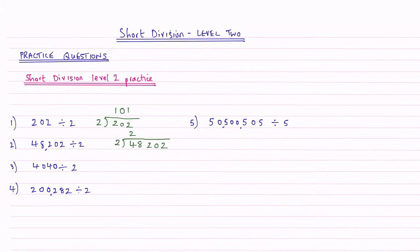2s into 8 go 4 times. 2s into 2 go once. 2s into 0 go nothing. And then the last 2, 2s into 2 go 1. So my answer for question 2 is 24,101.